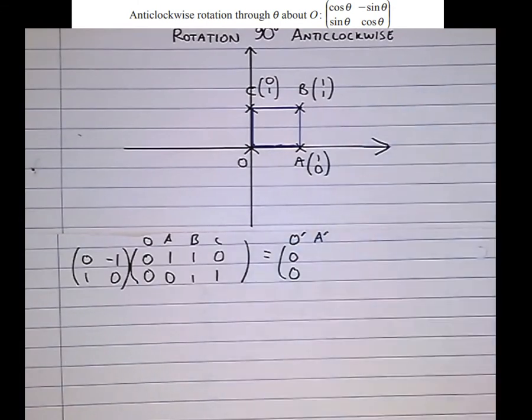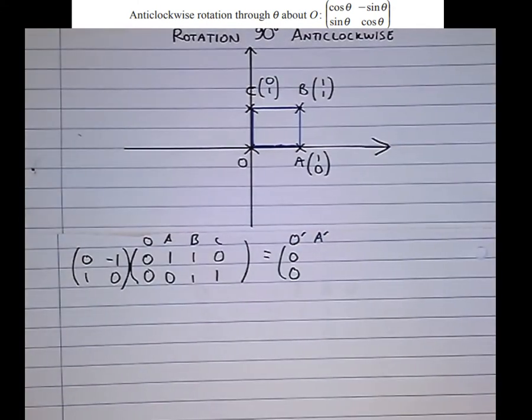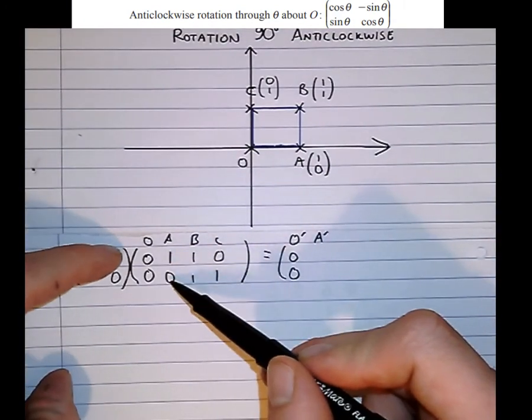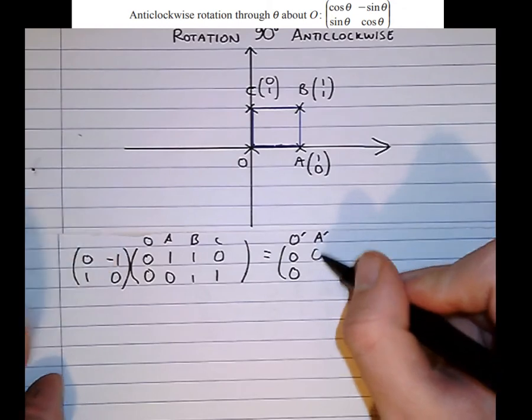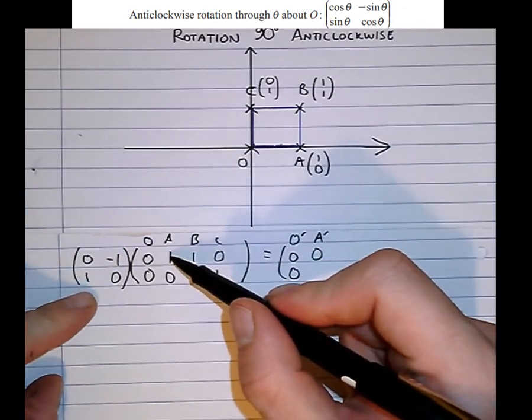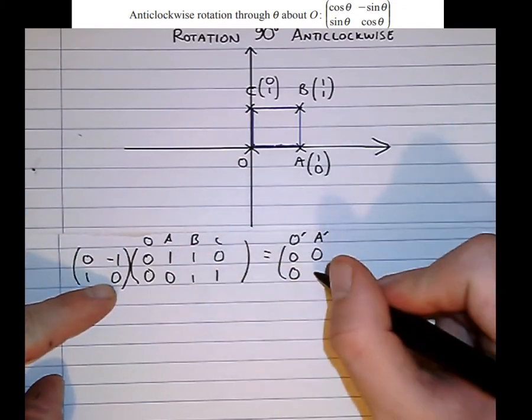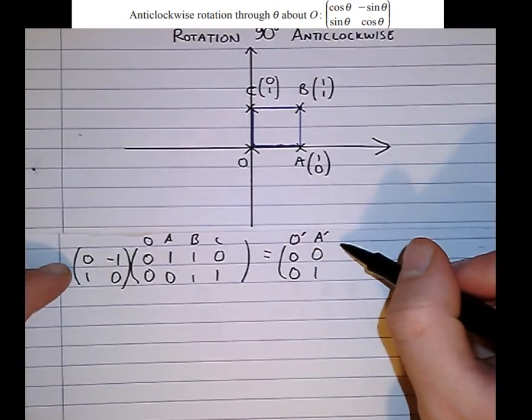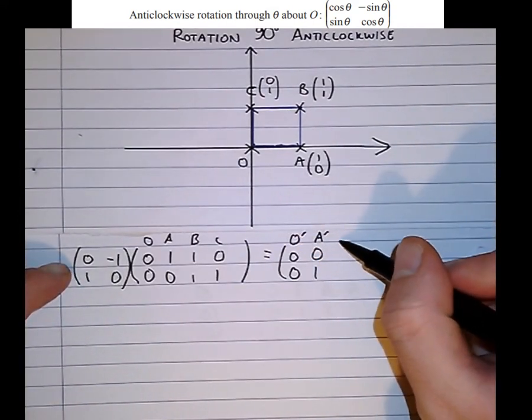Now let's have a look at the image of A. And that's what the dash means, the image of A. So 0 times 1 plus minus 1 times 0 is 0. 1 times 1 plus 0 times 0 is 1. So the image of A is 0, 1.